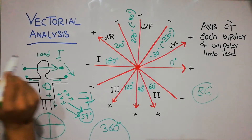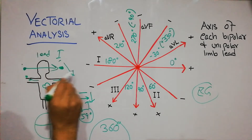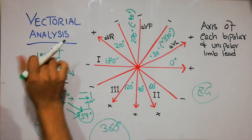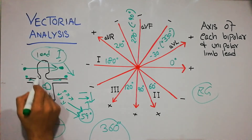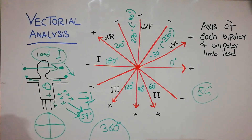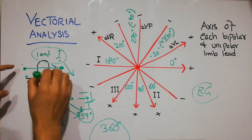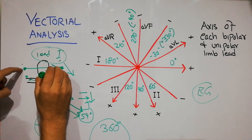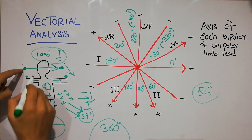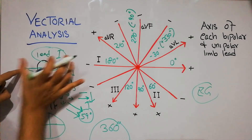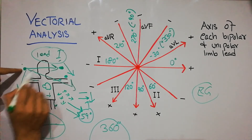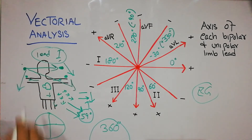Lead I connects the two arms — right arm with left arm — as a horizontal line, and has been assigned to that position. Lead I always looks at the heart from this fixed direction. Depending on the direction of the vector, it will have a different impact on Lead I — whether the vector points left, right, or at another angle.